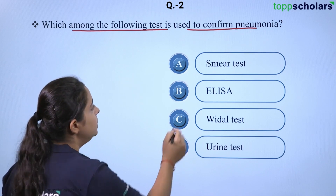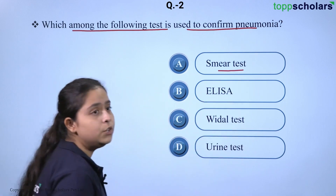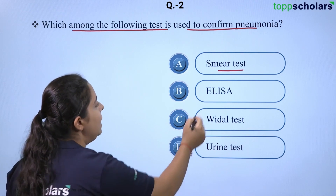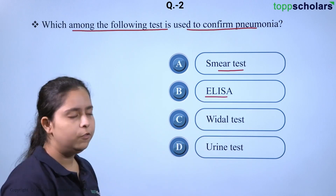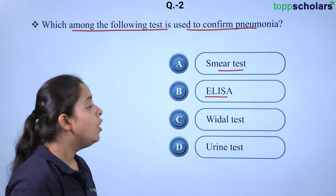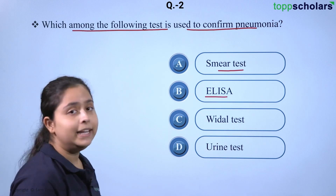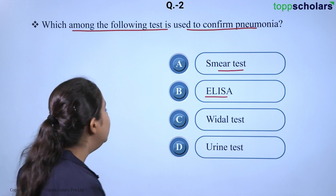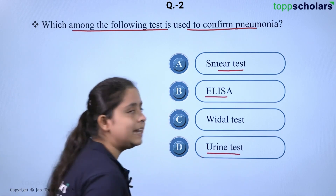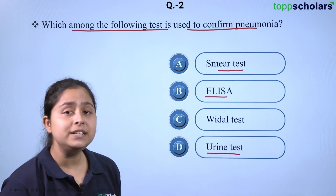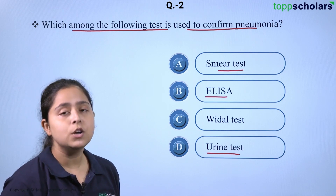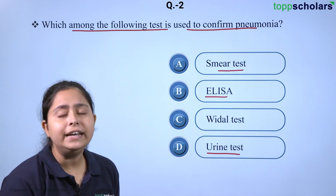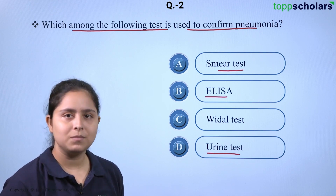The smear test is used for cervical testing. ELISA is used very popularly for detecting antibodies against the HIV virus. The urine test is recommended when the patient is suffering from diabetes or is suspected to have kidney-related disorders.